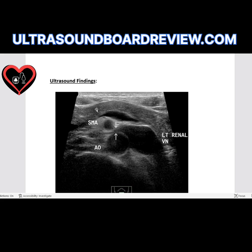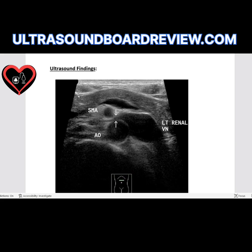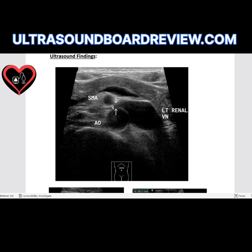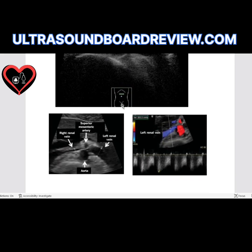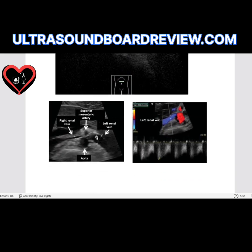On ultrasound, we're viewing a transverse view with the index pointing toward the patient's right side, showing the head, neck, body, and tail of the pancreas. Just below, we have the superior mesenteric artery and the aorta. You can see the left renal vein is compressed in this image and then dilates. In another transverse view of the pancreas, you can see the SMA and aorta compressing the renal vein, with the left renal vein visibly dilated.